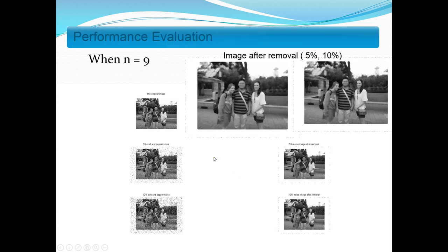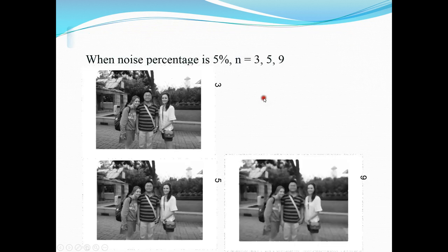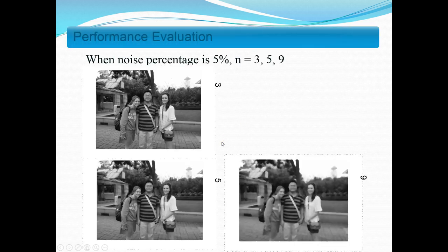When N equals 9, we can find that you cannot see any noises. But the quality of the picture is very bad — you cannot even recognize the face of the people in the picture. Here I compare different window sizes with 5% noise percentage. When the window size is 3, we get a certain picture; when it's 5, the result changes; and when it's 9, further changes occur.